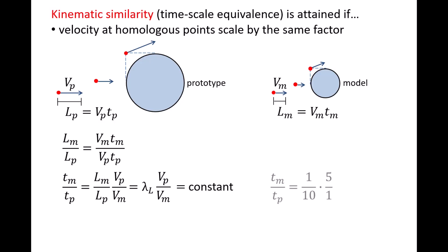For example, let's say lambda l is 1 over 10, and the flow speed in the prototype is 5 times larger than the flow speed in the model. This means the ratio of tm over tp is 1 half. In other words, running the model for 1 minute is equivalent to running the prototype for 2 minutes. Time is effectively sped up by a factor of 2 in the model.